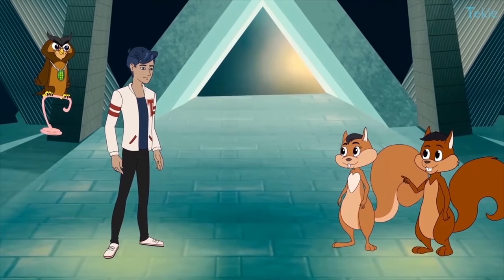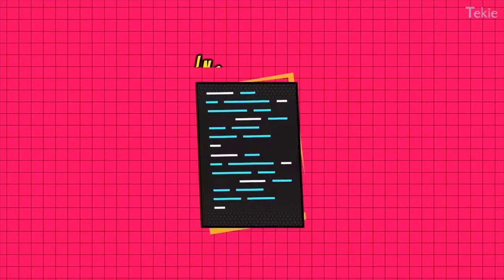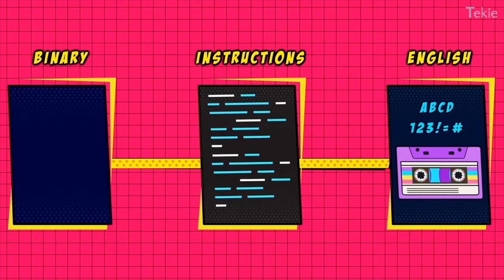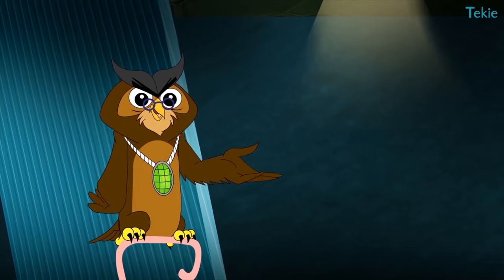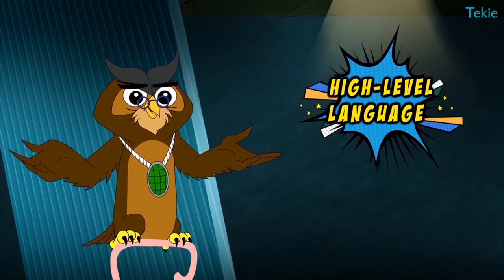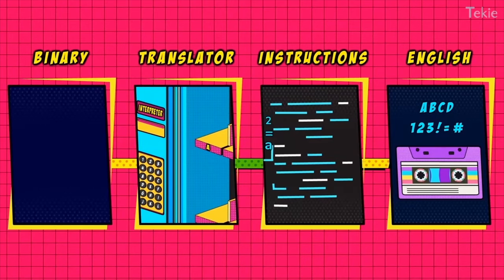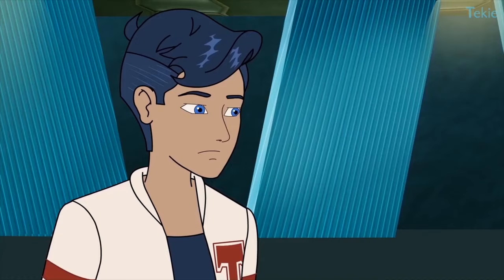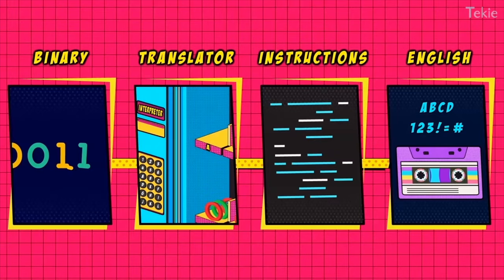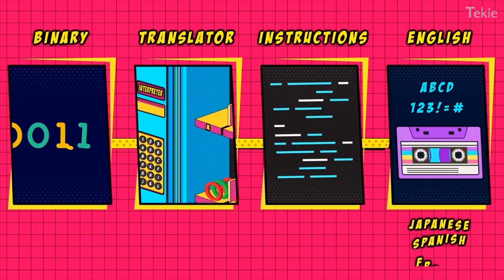For now, think of it this way — you just give your instructions in a language closer to English. We call this a high-level language, which is translated into the language the computer understands. Oh, that's helpful. And like we have different languages to talk to each other, computers also have multiple languages, like Python, Swift, and Java.